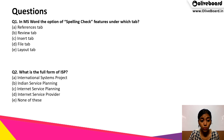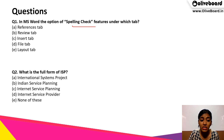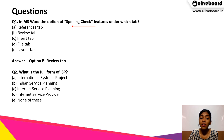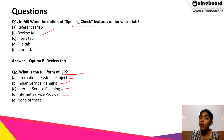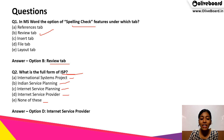Now we have questions for you. The first question: in MS Word, the option of spelling check feature is under which tab — Reference tab, Review tab, Insert tab, File tab or Layout tab? The correct answer is Review tab, option B. The second question: what is the full form of ISP — International Systems Project, Indian Service Planning, Internet Service Planning, Internet Service Provider or none of these? The correct answer is option D, Internet Service Provider.